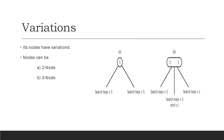Since 2-3 trees themselves are a specific instance of a B-tree, they do not have any variations. However, the nodes they contain can vary. The nodes can be either a 2-node or a 3-node. Two-nodes contain exactly one value, and the values in the left subtree are less than the value in the node, and the values in the right subtree are greater than the values in the node.